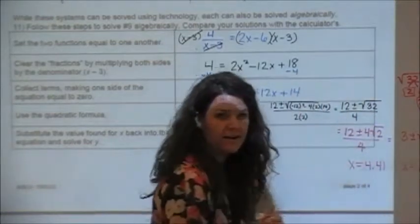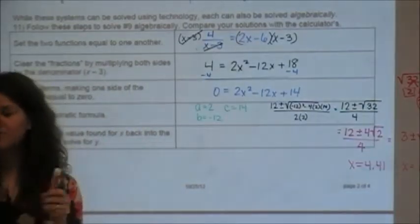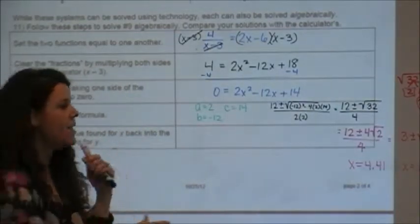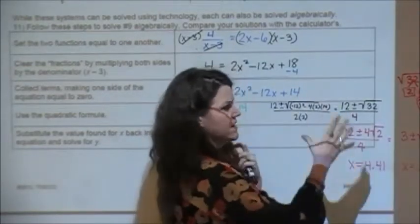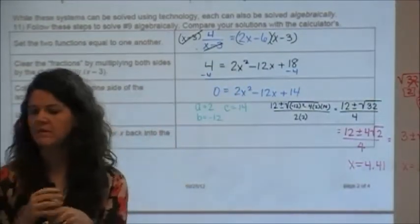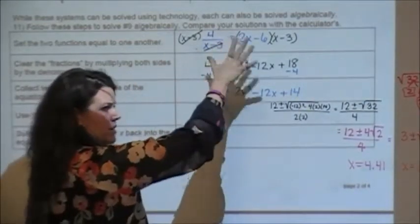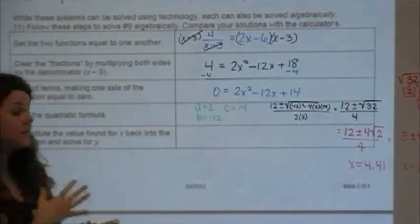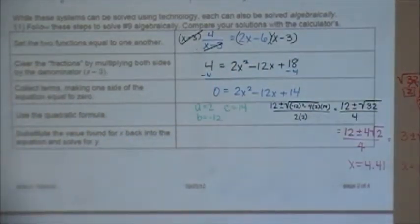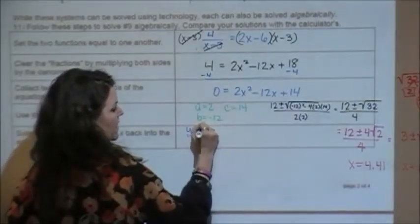Y'all good so far? One more step, because remember the answer to these problems are actually ordered pairs, and right now I don't have an x and a y, I have two x's. That's because this crosses the graph at two places. So I have to take my x values and plug them back into either equation, doesn't matter which one, and find my y values. Choose the easier equation. The easiest equation is y equals 2x minus 6, so that's where I'm going to plug my x values.